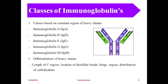There are five major classes of immunoglobulins: IgA, IgD, IgE, IgG, and IgM. Their differentiation is based on the heavy chains, including differences in the length of the C region, location of disulfide bonds, hinge region, and distribution of carbohydrate. Disulfide bonds attach to the heavy chains. Based on heavy chains, these antibodies are differentiated into their respective classes.